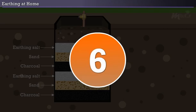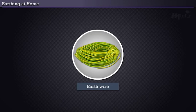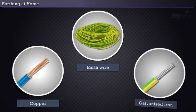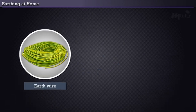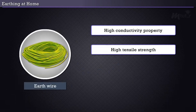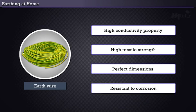Step 6: Once this is done, take the earth wire. This should be made of copper or galvanized iron. Also, the wire should have high conductivity property, high tensile strength, perfect dimensions, and more importantly, it should be resistant to corrosion.